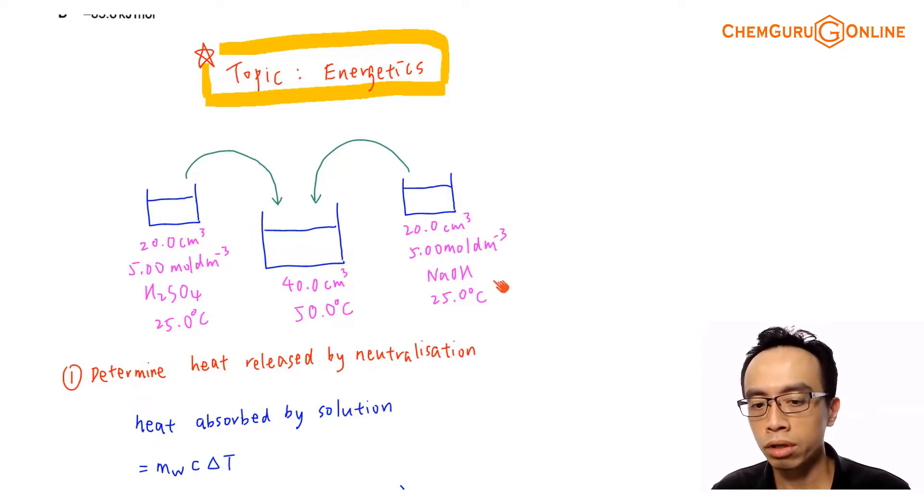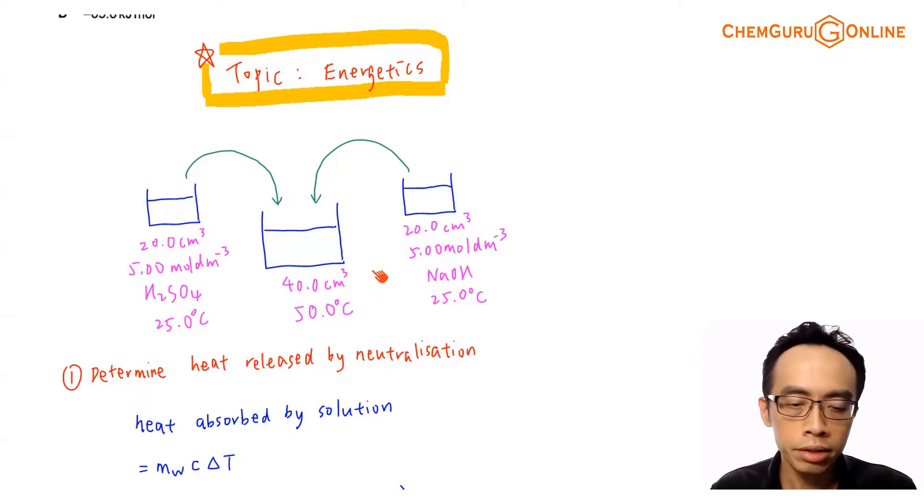So when I mix the two solutions together, the total volume obviously will be 40.0 cm³. Initially, the temperature for both of them is 25.0 degrees Celsius. And the highest possible temperature that we can measure when you add the two solutions together is 50.0 degrees Celsius. Now this is within expectation because we know that neutralization is an exothermic process.